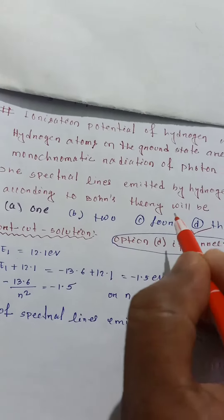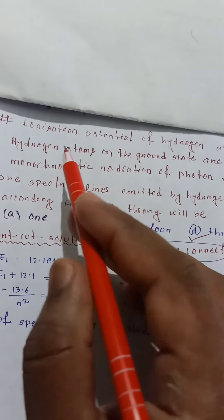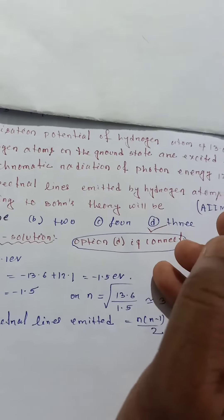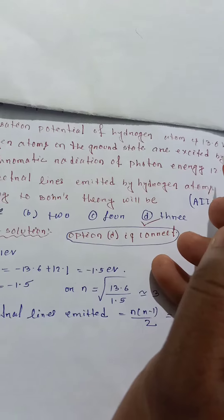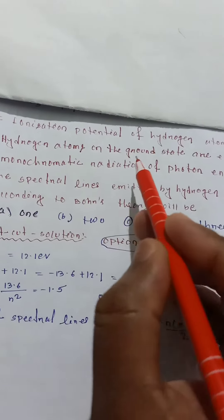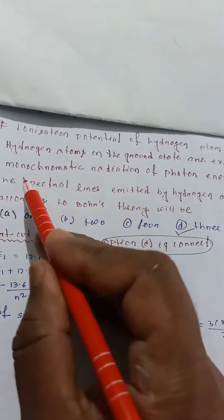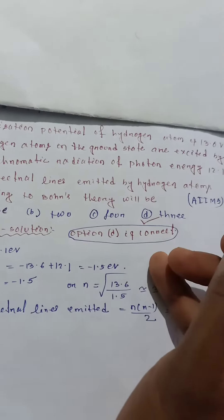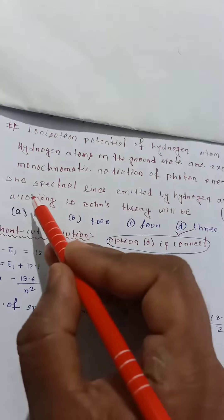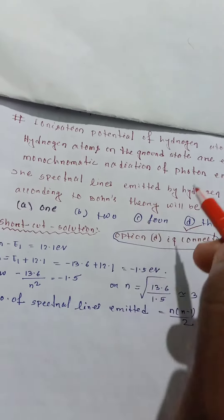according to Bohr's theory, will be. Ionization potential of hydrogen atom is 13.6 volts and the hydrogen atom in the ground state are excited by monochromatic radiation of photon energy 12.1 electron volts. The number of spectral lines we have to calculate.